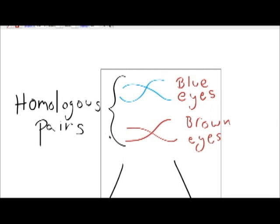One of the key differences between mitosis and meiosis is the fact that in meiosis, the chromosomes are aligned in homologous pairs — the paternal chromosome and the maternal chromosome. For example, while the paternal chromosome may contain the gene for blue eyes, the maternal chromosome may contain the gene for brown eyes.